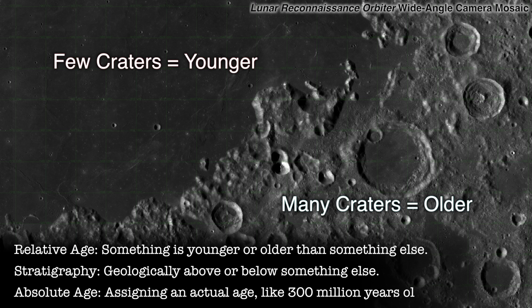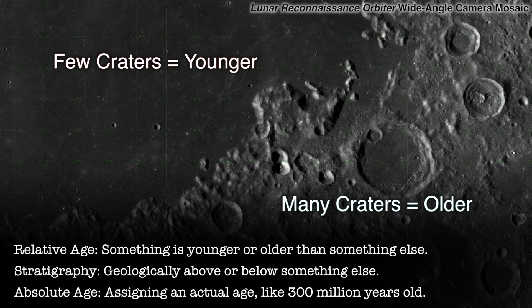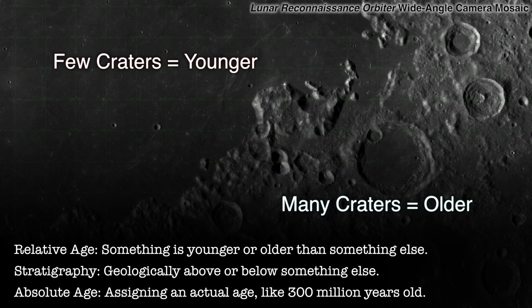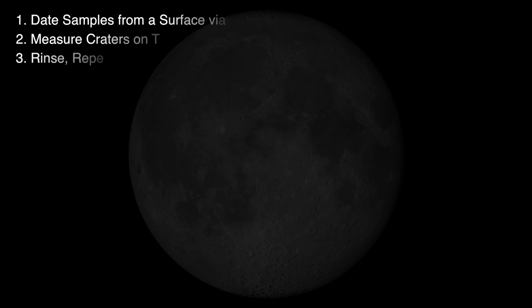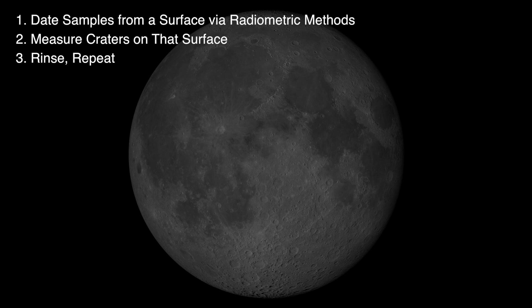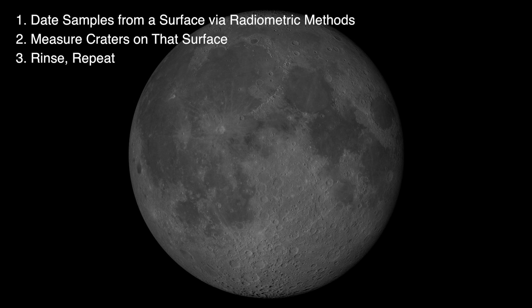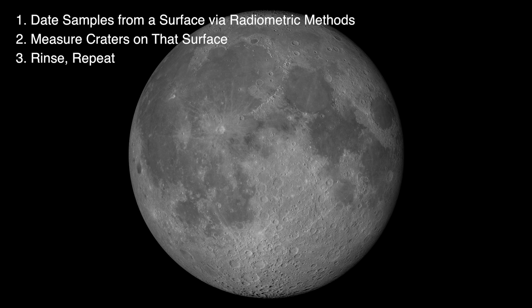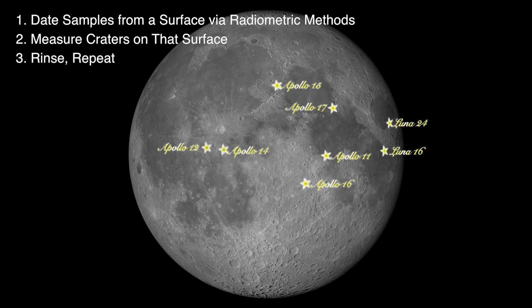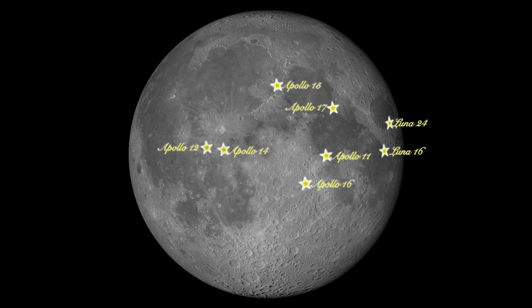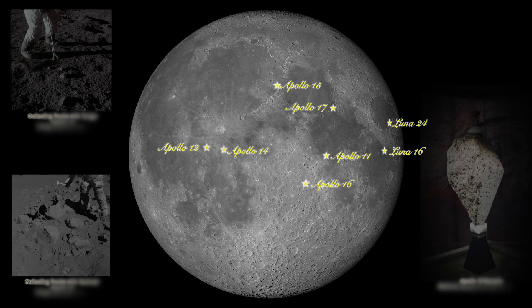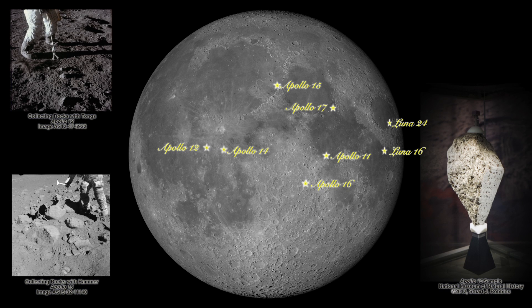The next step, to move from relative ages to absolute ages, is to tie the spatial density of craters to something that we know the age of. To do that, we need a surface that has a certain population of craters, and we need to know when that surface was reset and started to accumulate those craters. The Apollo and Luna sample return missions from the moon let us do this. These missions returned rocks and other material that has been dated by radiometric methods to provide an absolute age of that surface.